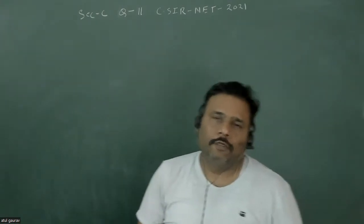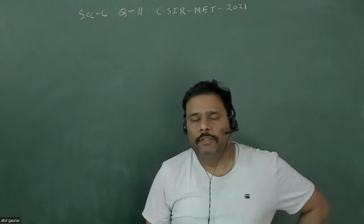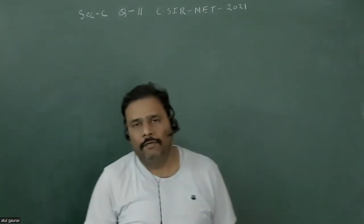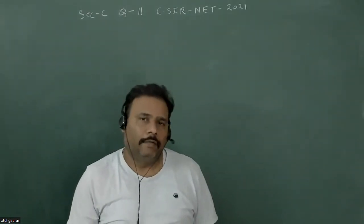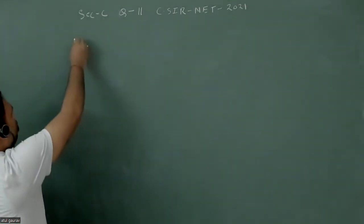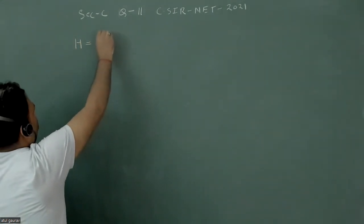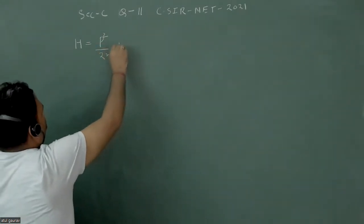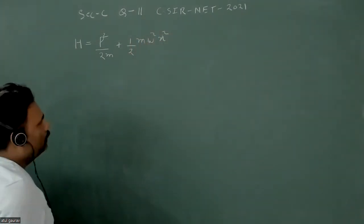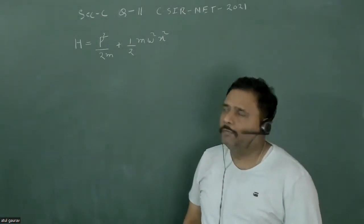Let's solve a problem from CSIR NET 2021. This is a very interesting one involving a harmonic oscillator where our particle is in the ground state. The Hamiltonian of the harmonic oscillator is given as p squared upon 2m plus half m omega squared x squared, and our particle is in the ground state of this particular harmonic oscillator.